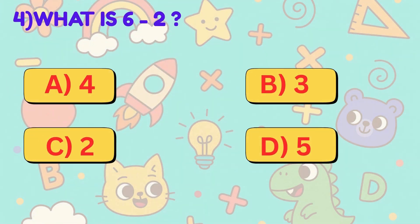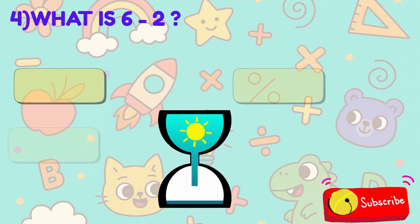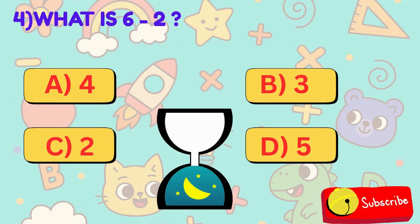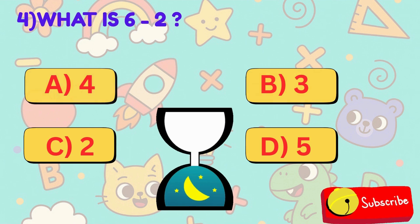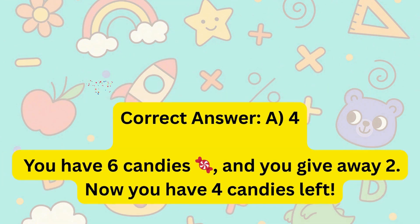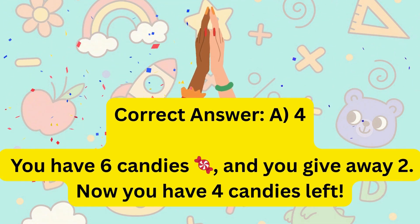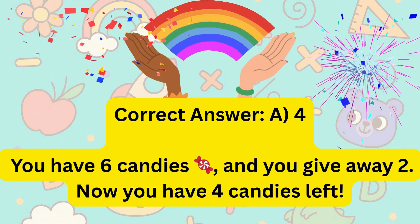4. What is 6 minus 2? Is it A, 4, B, 3, C, 2, or D, 5? Correct answer is A, 4.